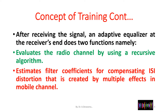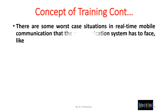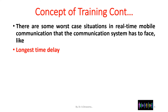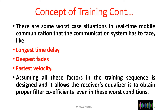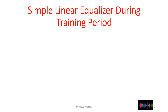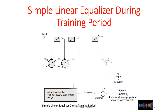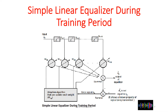The equalizer also estimates filter coefficients for compensating inter-symbol interference (ISI) distortion created by multipath effects in mobile channels. Worst-case real-time scenarios include longest time delay, deepest fades, and fastest velocity. The training sequence is designed assuming all these factors, allowing the receiver's equalizer to obtain proper filter coefficients even under those worst conditions. A simple linear equalizer during the training period is represented in this diagram.